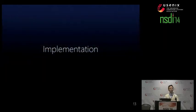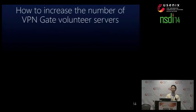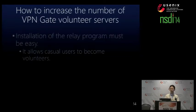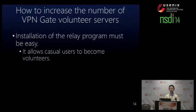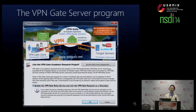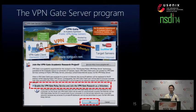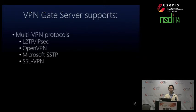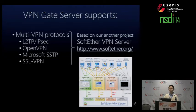Now we are going to talk about implementation. The problem is how to increase the number of VPN volunteer servers. Installation of the relay program must be easy so that casual users can become volunteers. The relay program must support running behind NATs. So we implemented the VPN Gate server program. A casual user can activate the relaying function of VPN Gate by just clicking a checkbox and clicking OK. This VPN server supports multiple VPN protocols including L2TP, OpenVPN, Microsoft SSTP, and SSL VPN for user convenience. This VPN protocol support is based on our other project, a software VPN server available as open source.